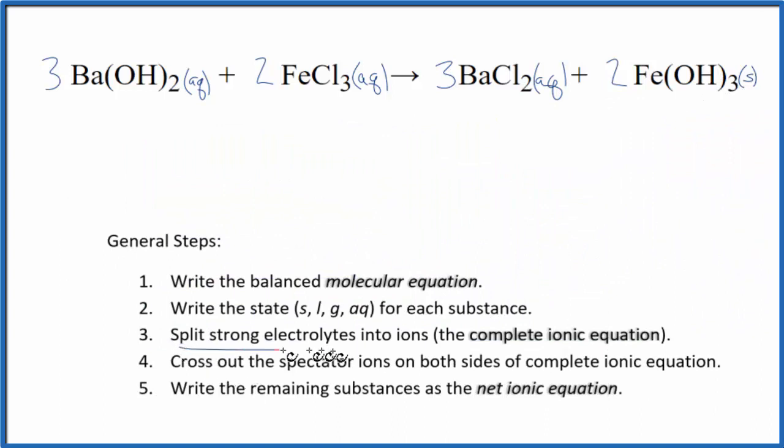Now we can split the strong electrolytes into their ions for the complete ionic equation. So we said this is a strong base, it's a strong electrolyte. Barium in group two, so it's 2+, and then the hydroxide, that's always 1-. So I have three barium ions, and I'll write the states later. Then I have two hydroxides times the three, six hydroxide ions.